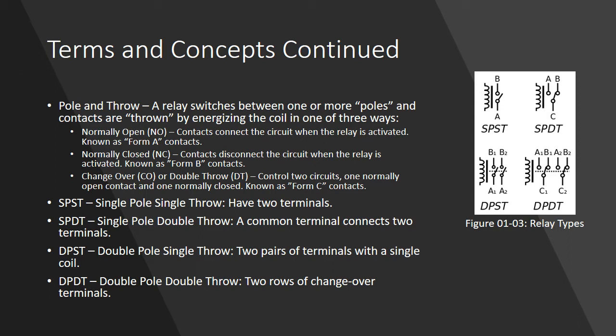A normally closed contact is a contact that has current passing through it when the relay is not activated. So normally open is current passes through it when the relay is activated; normally closed when it is not activated.